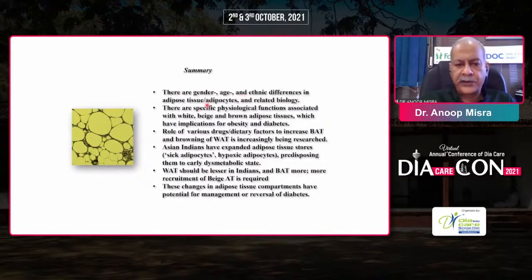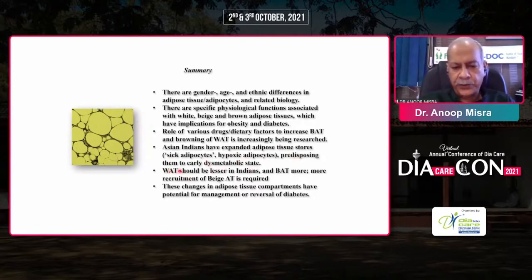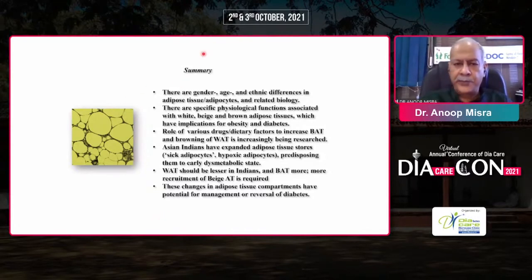To summarize: there are gender, age, and ethnic differences in adipose tissue and related biology. There are specific physiological factors associated with white, beige, and brown adipose tissue with implications for obesity and diabetes. The role of various drugs and dietary factors to increase BAT and browning of white adipose tissue is increasingly being researched. Asian Indians have expanded adipose tissue stores with sick and hypoxic adipocytes, predisposing them to early dysmetabolic state. White adipose tissue should be lesser in Indians and more recruitment of beige adipose tissue is required, with potential implications for management or reversal of type 2 diabetes. I thank Banshi, Arvind, Amit, and everybody for this opportunity and congratulate them on the success of this conference.